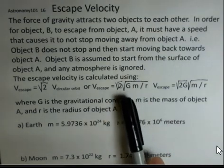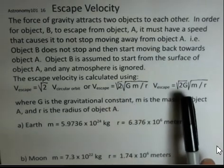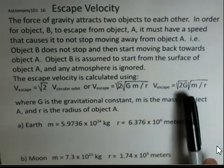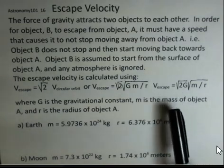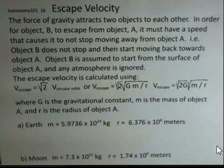We can rearrange things a little bit. I want to do this calculation four times. I want to factor out the constants into their own square root: square root of 2G in one square root, and square root of the mass of the object divided by the radius of the object in the next square root.